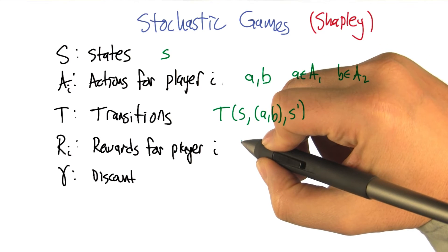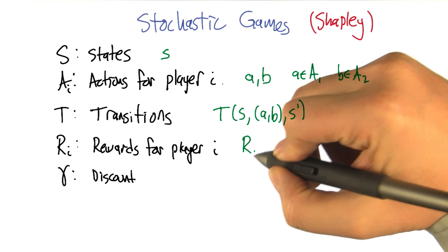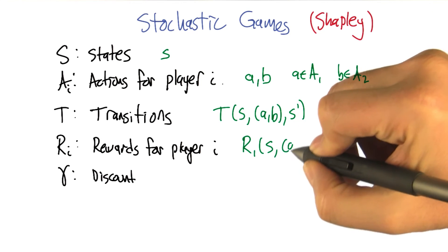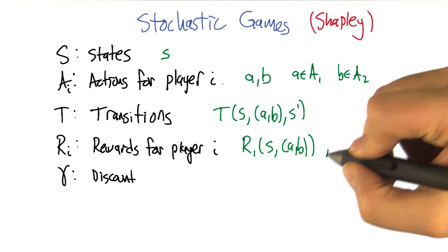And we can write rewards the same way. So there's reward for player one, given that we're in state s, and there's a joint action a, b. And there's the reward for the other player, the second player.